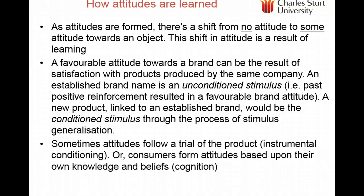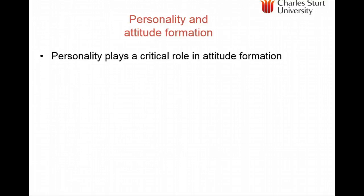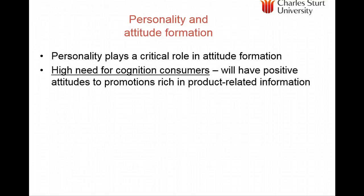Some attitudes follow a trial of a product, which we call instrumental conditioning. One way of changing consumers' attitudes is to reward their behaviour or encourage them to trial a product. Consumers can also form attitudes based on their own thinking, knowledge, and beliefs — we call this cognition.